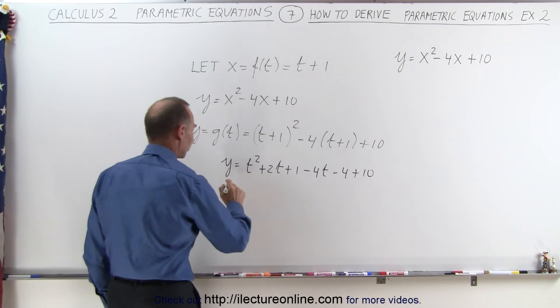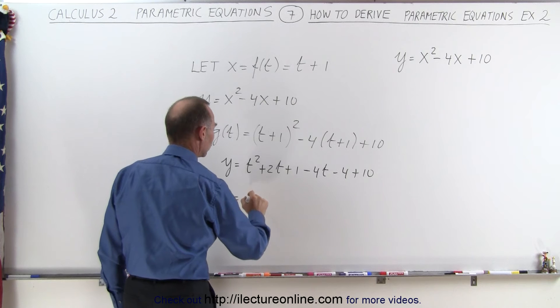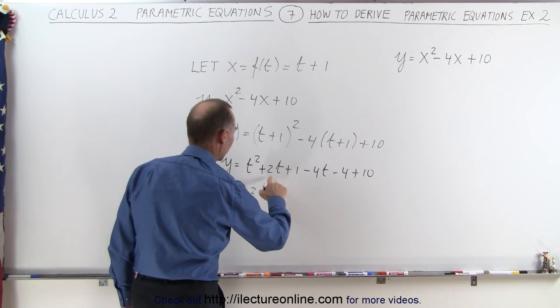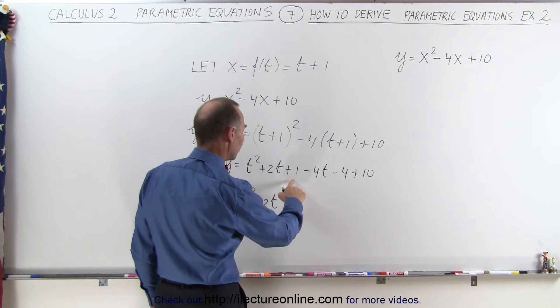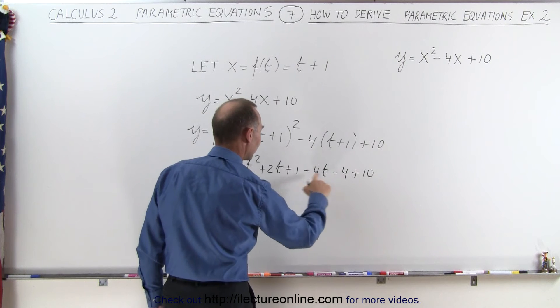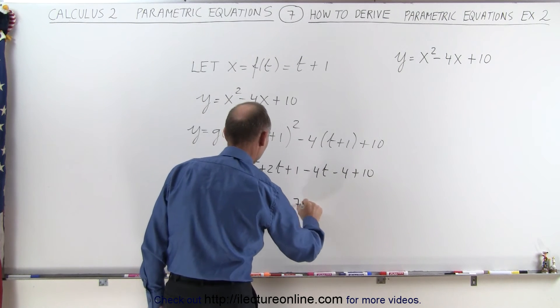And if we combine like terms, we get y is equal to t squared, 2t minus 4t, that's minus 2t. And the constants, we have 10 plus 1 is 11 minus 4, that would be plus 7.